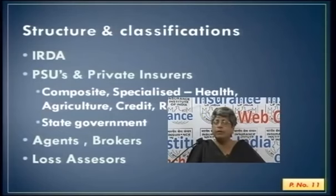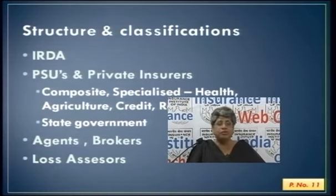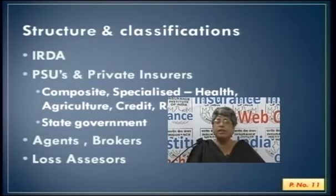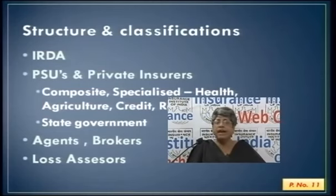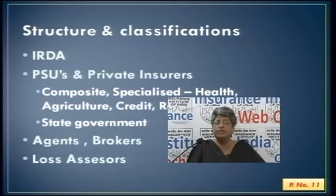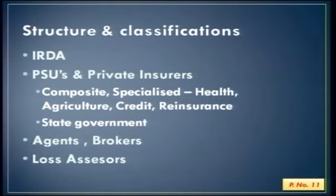There are over 27 life insurance companies and around 27 general insurance companies. In the general insurance companies, you have composite companies — meaning general insurance companies dealing with all general insurance products. Then there are specialized insurance companies dealing only with health. We have the Agricultural Insurance Company dealing with crop and animal husbandry, the ECGC dealing with credit insurance, and GIC — which was the controlling body during nationalization — is now only a reinsurer, acting as the main reinsurer for the insurance industry within the country.